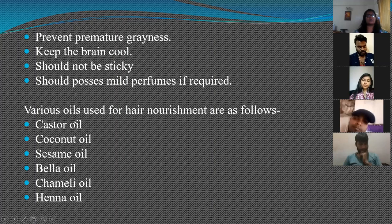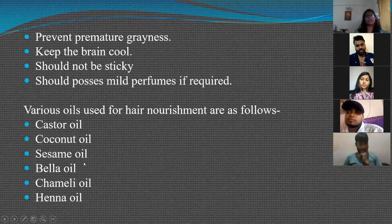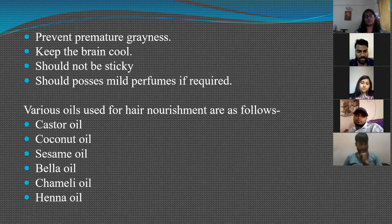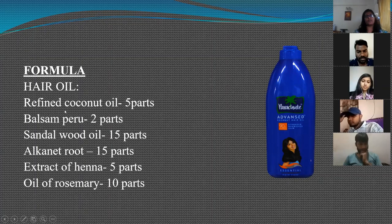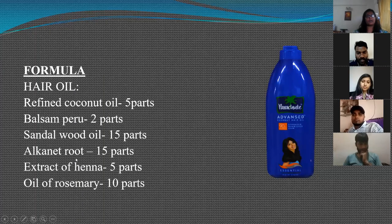Some oils used for hair nourishment include castor oil, coconut oil, sesame oil, bella oil, chameli oil, and henna oil. A typical formula of a herbal hair oil product contains: 5 parts refined coconut oil, 2 parts perubalsam, 15 parts sandalwood oil, 15 parts alkanet root, 5 parts henna extract, and 10 parts oil of rosemary.